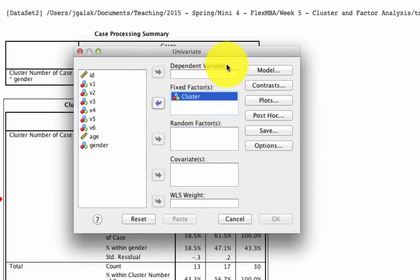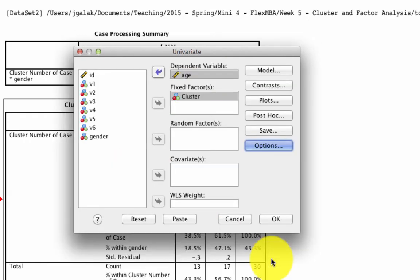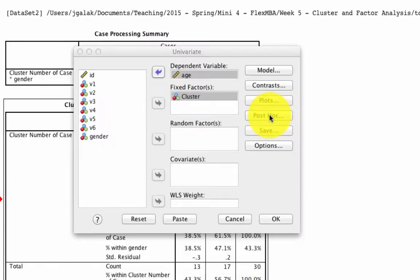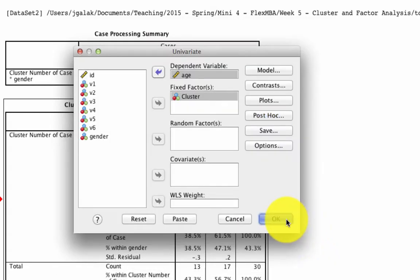We're going to ask in options for the means for cluster membership, as well as the descriptive statistics. And in post hoc, we're going to ask for the Bonferroni comparison on everything. In other words, we're going to compare every cluster to every other cluster. And that's it. And we run that.